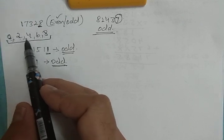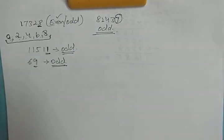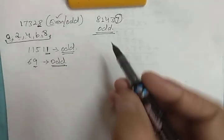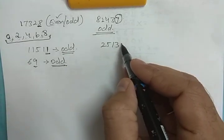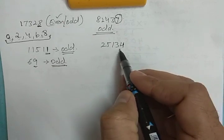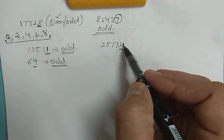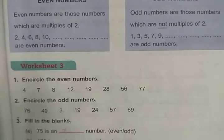You just need to learn these five digits — 0, 2, 4, 6, 8 — and it will help you tell whether a given number is even or odd. For example, 25134: the digit at the ones place is 4, and 4 is a multiple of 2, so 25134 is an even number. Now let's do worksheet number 3 based on even and odd numbers.